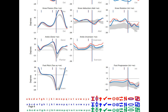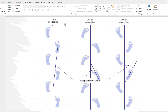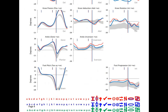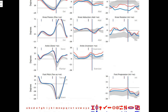Foot progression angle is a transverse plane measurement — the angle between the line from the second metatarsal head and the line of progression of the person walking. It is a measure of in-toeing and out-toeing. From the average data, we would expect everyone to out-toe ever so slightly, by around 15 degrees, which is normal.